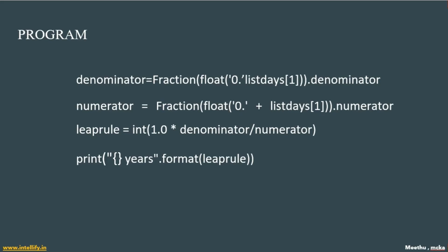Next we find the leap year rule. We know that 0.25 × 4 = 1.0, meaning an extra day. For example, 1/4 × 4 = 1.0. Here 0.25 is taken as 1/4, so the denominator is 4 and numerator is 1. The formula is 1.0 × (denominator / numerator) = 4, which is the leap year rule. Finally, we print the value inside the variable 'leap_rule'.